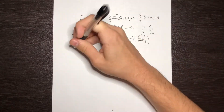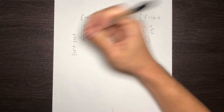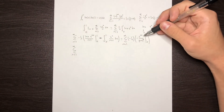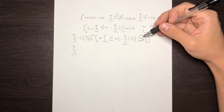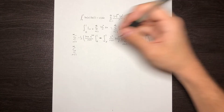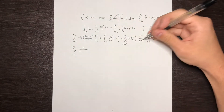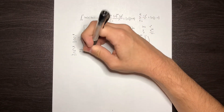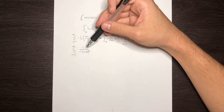Plugging in the bounds, we have the sum from n equals 1 to infinity of negative 1 over n times negative 1 over n plus 1 squared. The negatives cancel, leaving us with 1 over n times n plus 1 squared. It's pretty nice that this integral simplified down into this interesting summation.